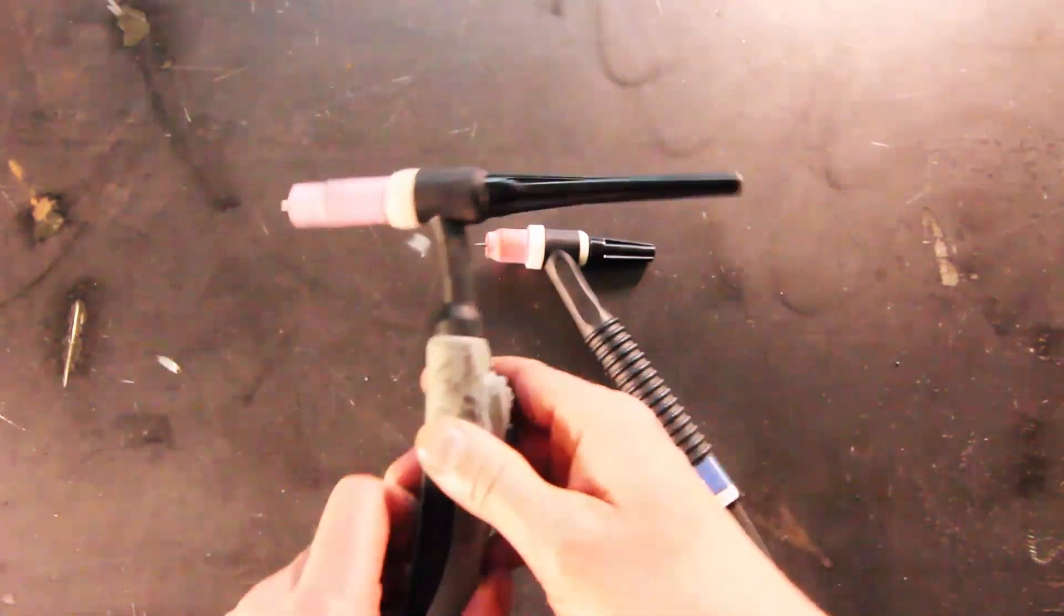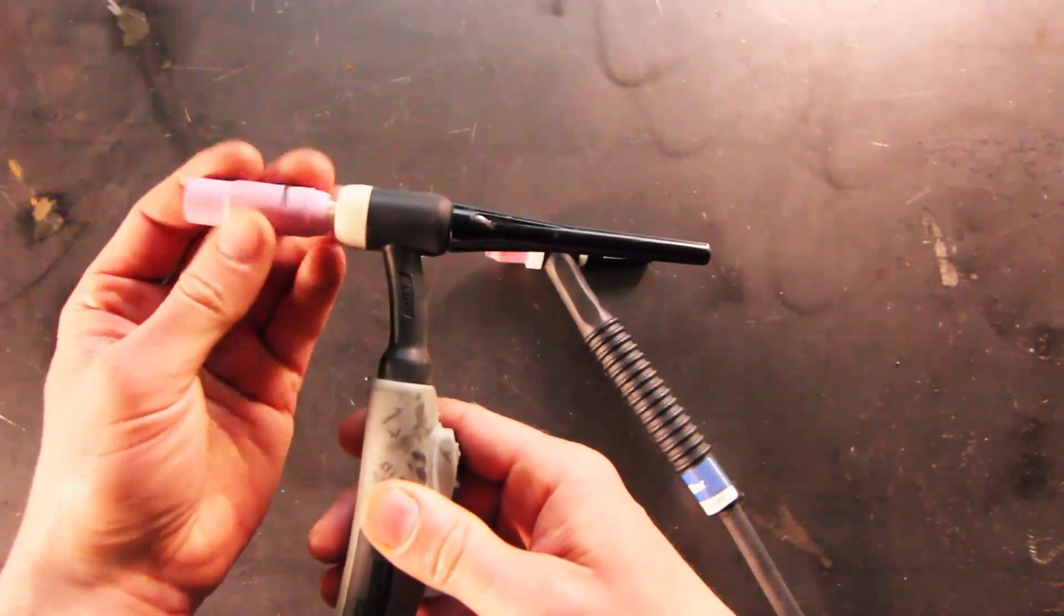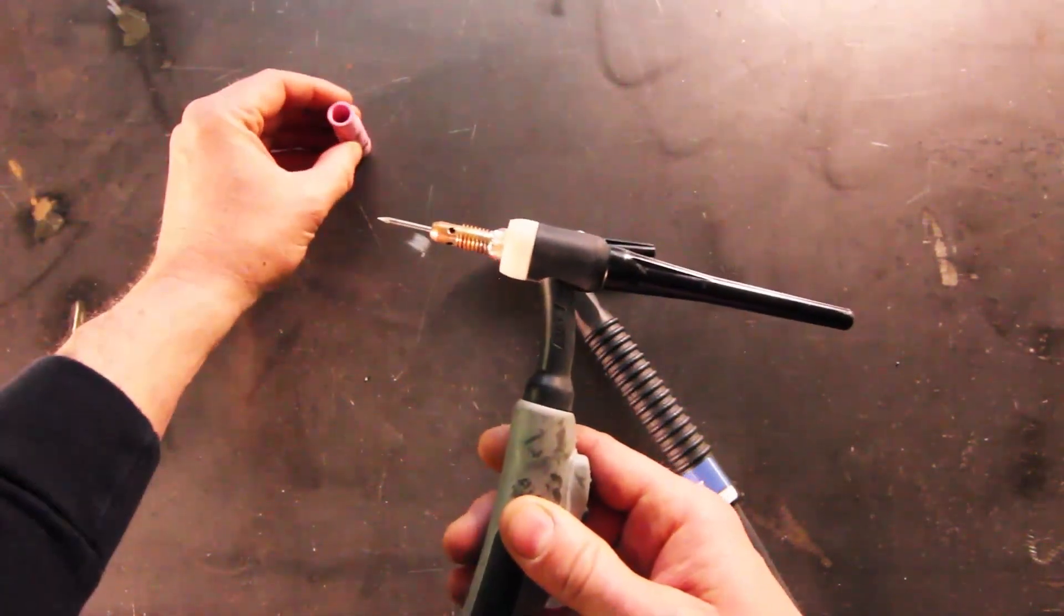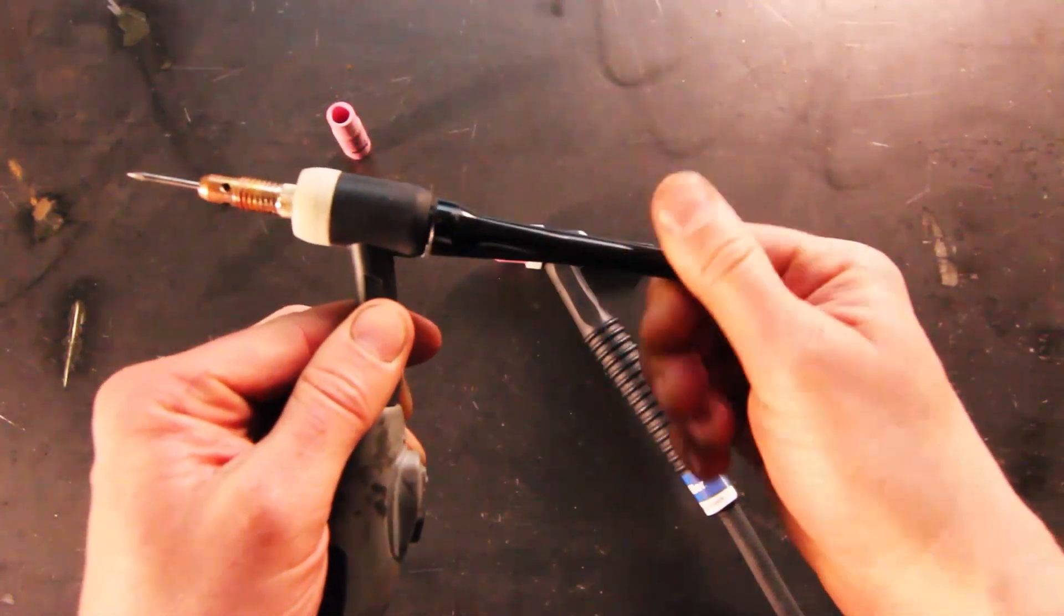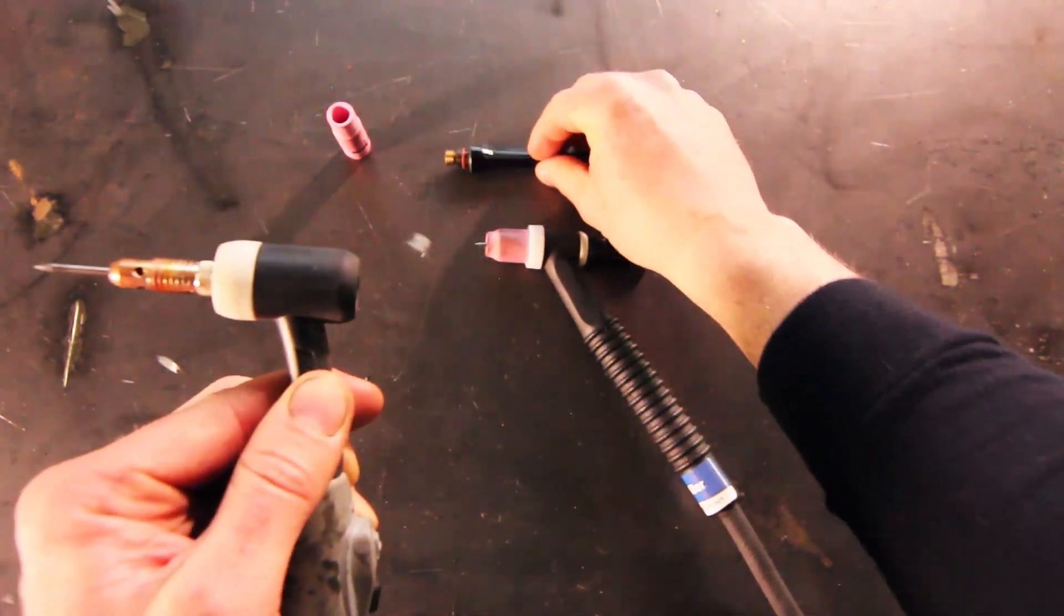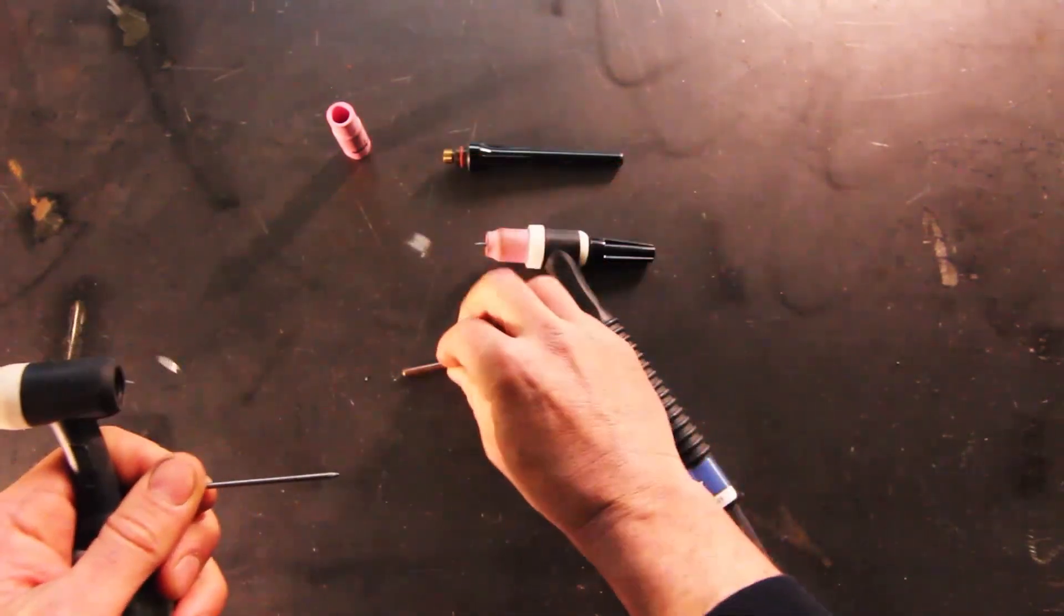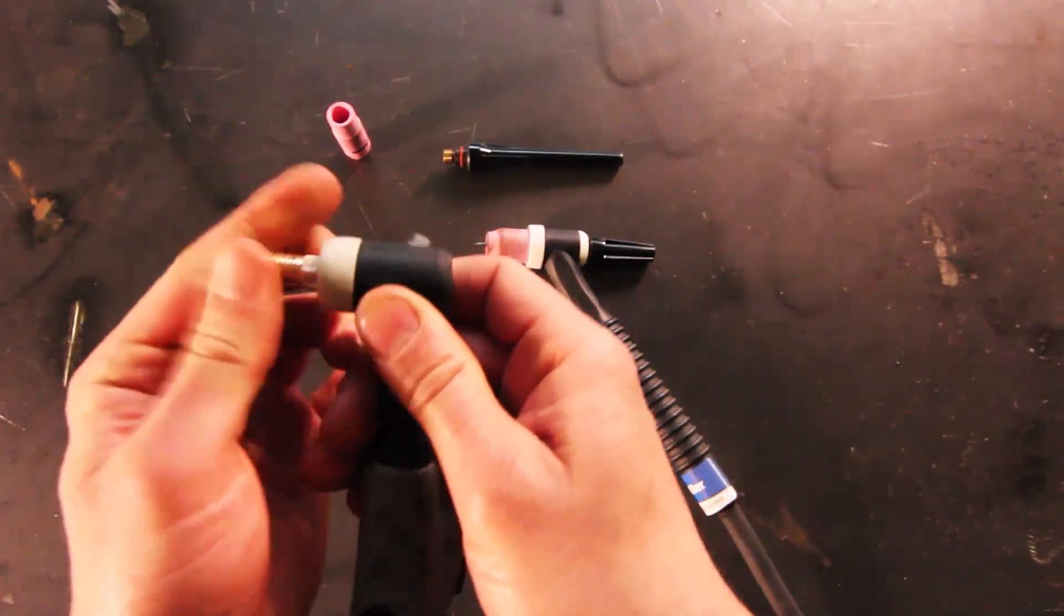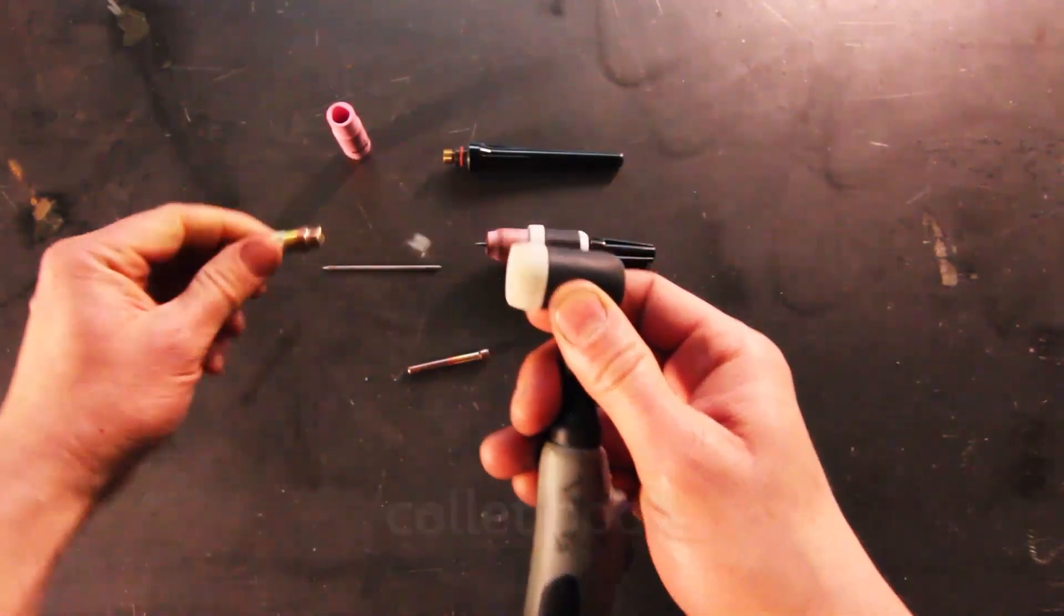We're going to break this down. I'm going to unscrew the nozzle or cup - as you can see, it's a longer nozzle, a number seven. Now I'm going to unscrew what's called the torch cap or back cap. After you're done unscrewing your back cap, you can see that the collet and tungsten slide right out of the back. Then you can unscrew the collet body from the torch head itself.